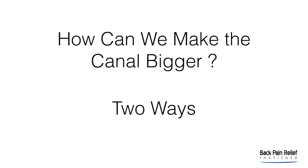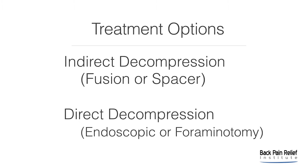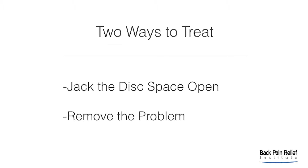There are really two treatment options. One is indirect decompression, which can be achieved with a fusion or a spacer. The other is direct decompression, referring to an endoscopic approach or a foraminotomy. In simple terms, there are two ways to treat the problem: one is to jack the disc space open, or two, remove the problem.